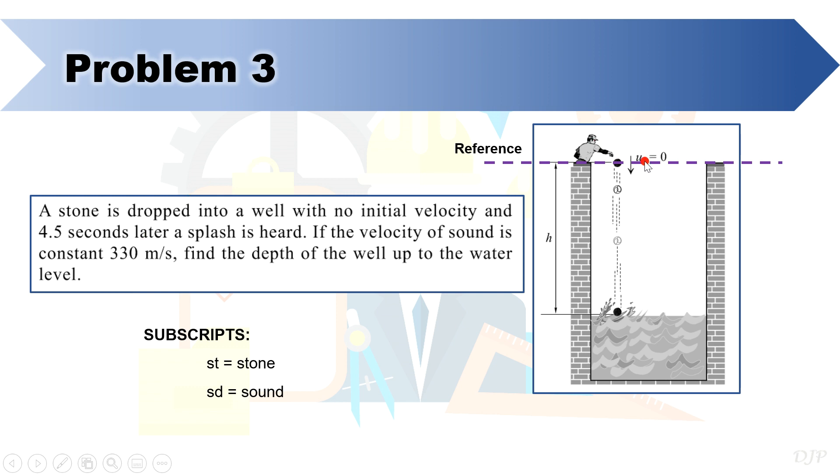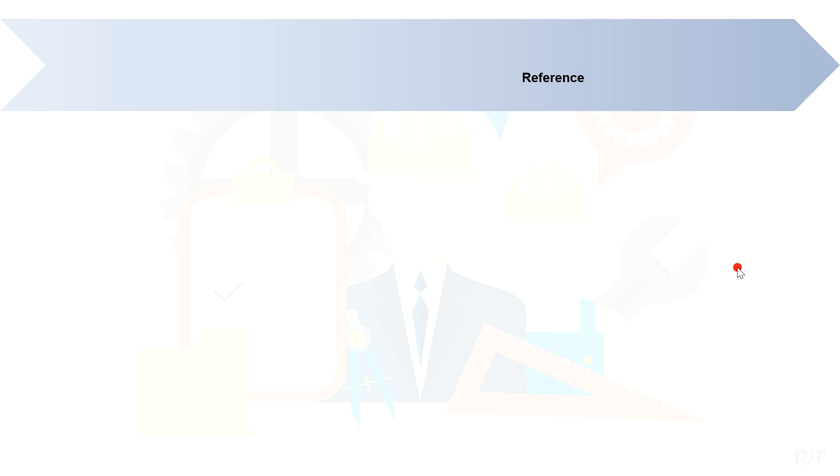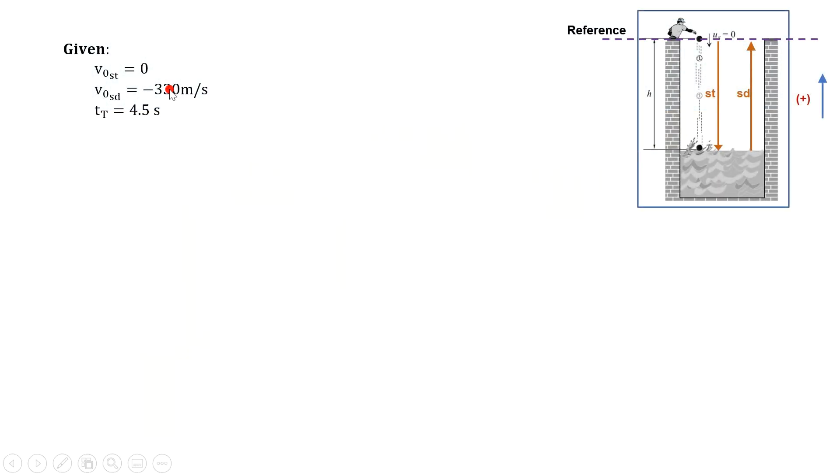So this will imply that the initial position of the stone is equal to zero. The first motion that we will analyze is the motion of stone, followed by the motion of sound. As a guide, let's denote all vectors directed upward as positive. We are given here initial velocity of the stone is equal to zero, and for the sound, a constant value of negative 330 meters per second. A negative sign is written based on our set convention. Also, we are given the total time of 4.5 seconds that the splash was heard after dropping the stone.